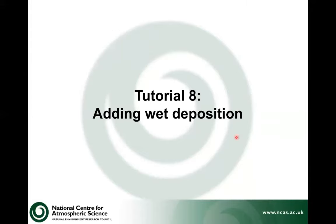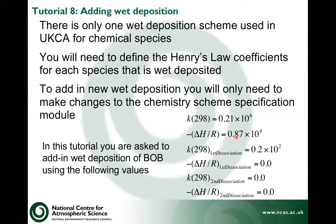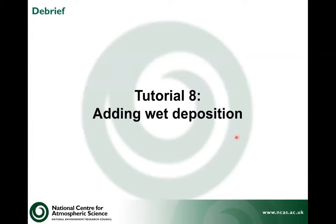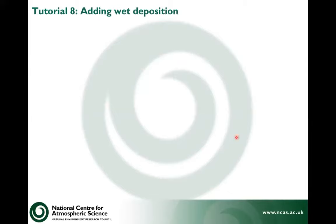Now we need to think about wet deposition. There's only one scheme used for chemical species — you need to define the Henry's Law coefficients. You make changes just to the chemistry scheme specification module, and you need to add in the wet deposition of Bob with the given values. The wet deposition is probably one of the simplest schemes so far; it could be made more complex, but it's as it is at the moment.